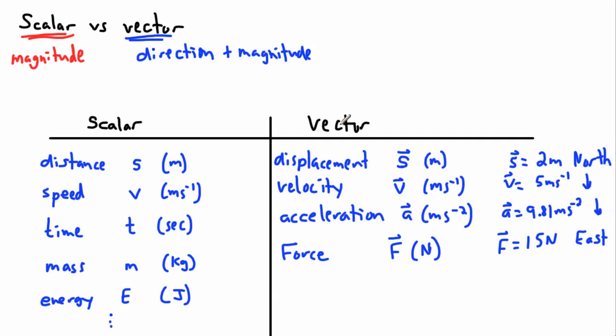So vectors are quantities where direction matters. It's absolutely important. You have to state or think about not only the length of the arrow, but also the direction that the arrow is pointing. Those are vectors. And opposite to those are scalars. Scalars only have a magnitude. In other words, only a length, only a value. But the direction doesn't matter. Direction is silly here. It doesn't make sense.